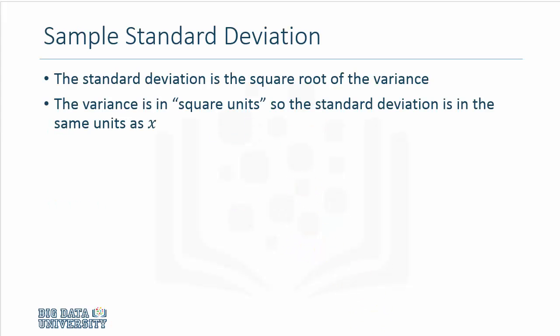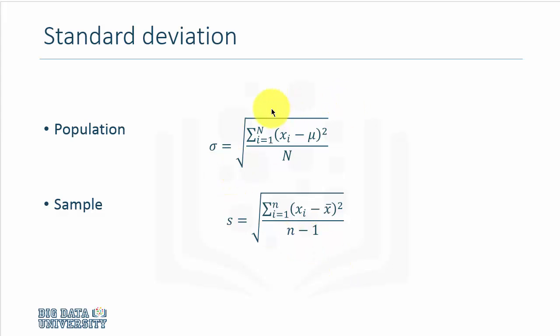We usually talk about standard deviation rather than the variance. And standard deviation is essentially the square root of the variance. And the variance is in square units, so it's good to use the standard deviation because it's exactly the same units as the variable. So the standard deviation of age will also be measured in years rather than square years, which would be variance.